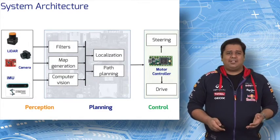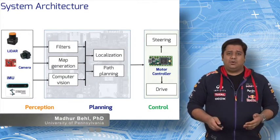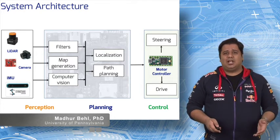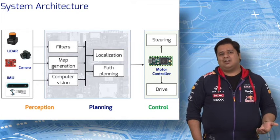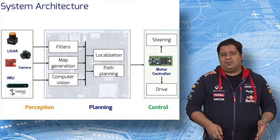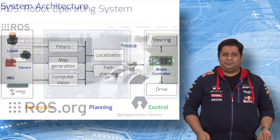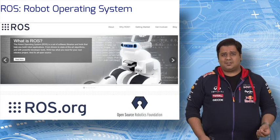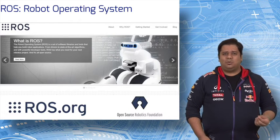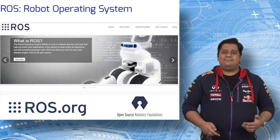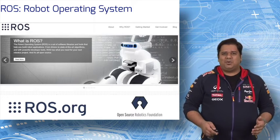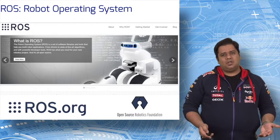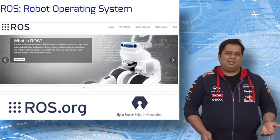We discussed last time how the software which runs onboard the computer plays a key role in implementing the perception, planning, and control algorithms that we use to autonomously drive the car. We will now cover how the software is actually implemented. All the racing software that we use on our car is implemented using ROS. ROS stands for robot operating system. It is completely free and open-source and provides a set of software libraries and tools that help you build robot applications which can work across a wide variety of robotic platforms.